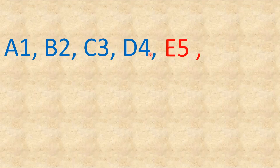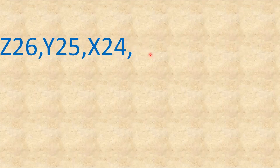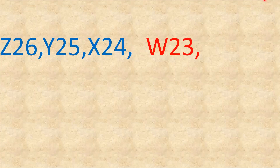Next: a1, b2, c3, d4 — the next is e5, f6. Last pattern: z26, y25, x24 — this is going in reverse order, both letters and numbers decreasing — so the next pattern is w23, v22.